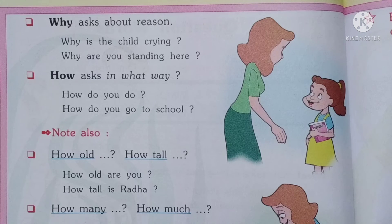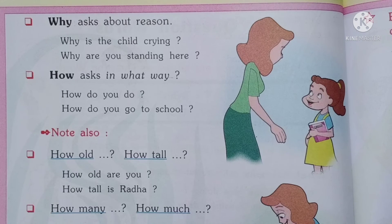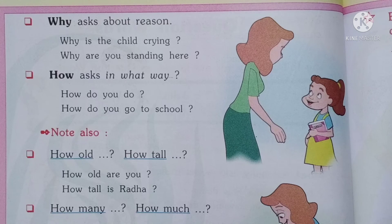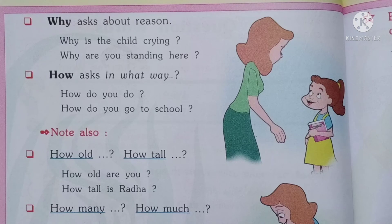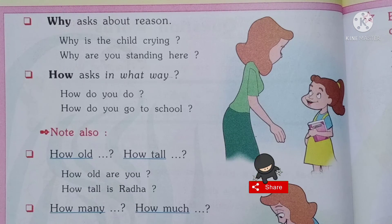The next word is 'how' (H-O-W). 'How' is used to ask in what way something happens. For example: how do you do? How do you go to school? How is your health? How are you going to market? When we ask this type of question to another person, we use 'how' at the beginning.